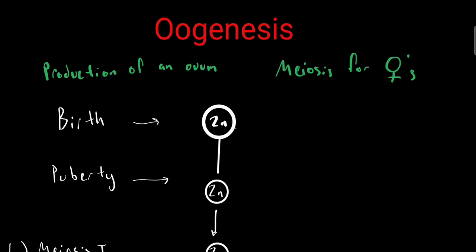Now oogenesis is the production of a female ovum, and meiosis occurs for females here. Starting at birth, females have roughly 400,000 unfinished eggs, and these eggs are diploids that have 23 pairs of chromosomes and are in the G1 of interphase.